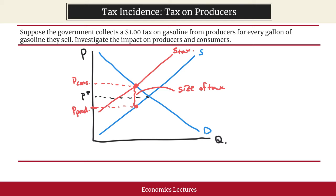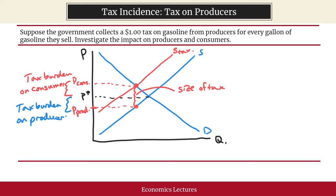We can see here the tax burden is shared. The difference between the price that consumers pay and the price that would prevail without any taxes is the tax burden on consumers. The difference between P star — the price that would prevail without taxes — and P prod, or the price that producers get to keep with taxes, is the tax burden on producers. The result is that the tax burden is shared by both consumers and producers even when the government decides to only collect taxes from producers.